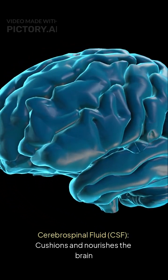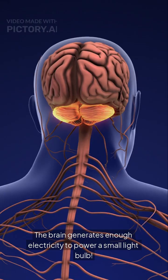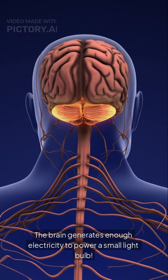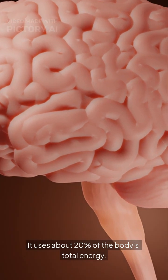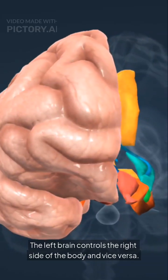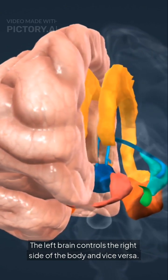CSF cushions and nourishes the brain. Fun facts: The brain generates enough electricity to power a small light bulb. It uses about 20% of the body's total energy. The left brain controls the right side of the body, and vice versa.